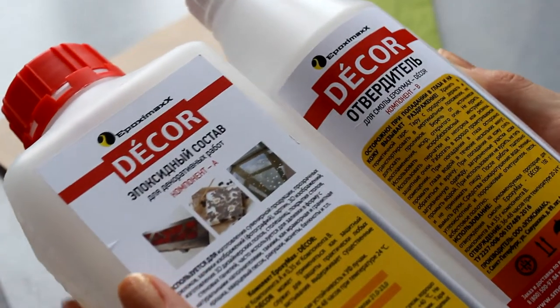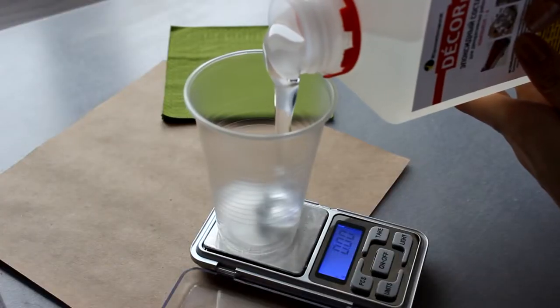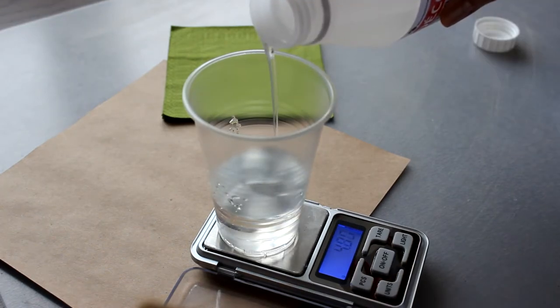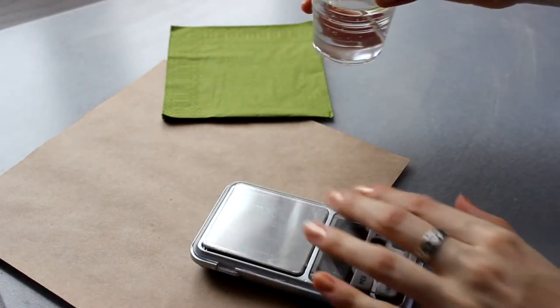I protect my working surface and take up the resin. As I'm going to color the resin, its transparency is not that important, so I take the resin for decor. As usual, I mix up the resin in the required ratio written on the packaging.